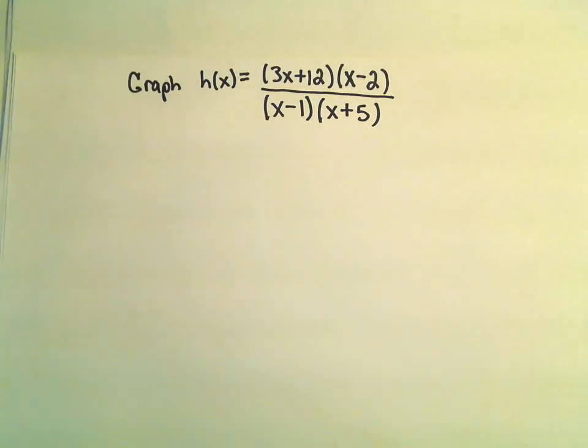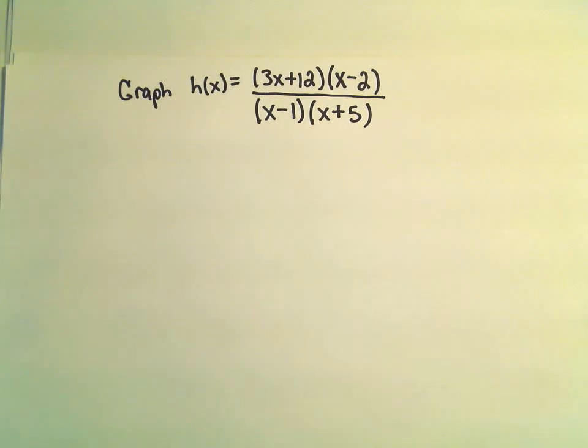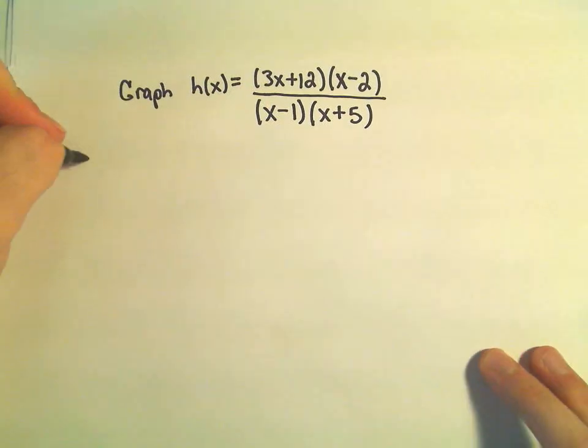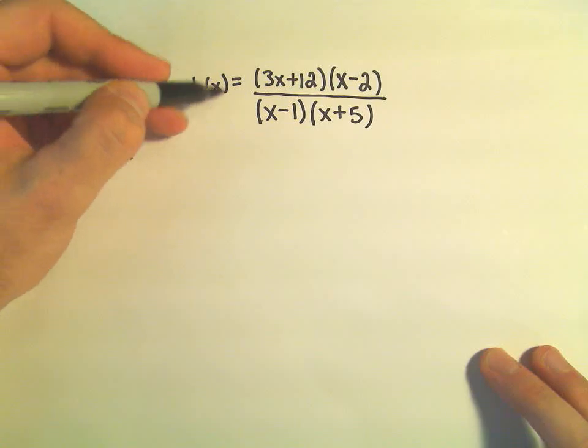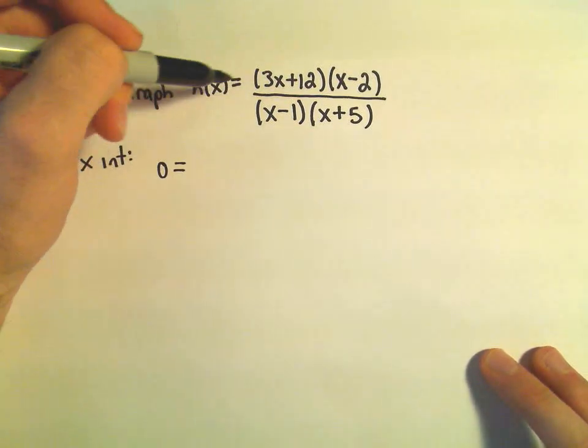So in this case we've got the rational function 3x plus 12 times x minus 2 over x minus 1 times x plus 5. So to find x-intercepts, we just set the left side equal to 0.